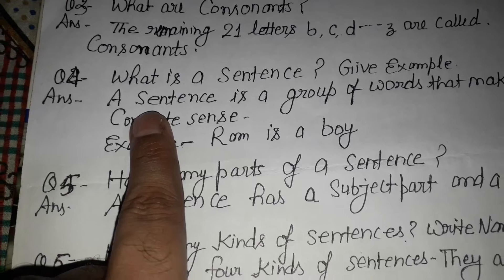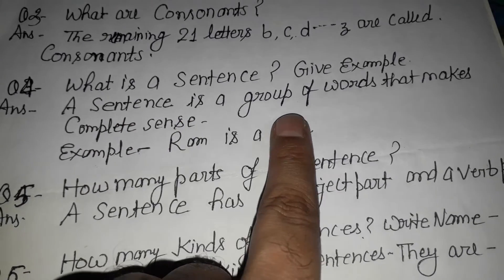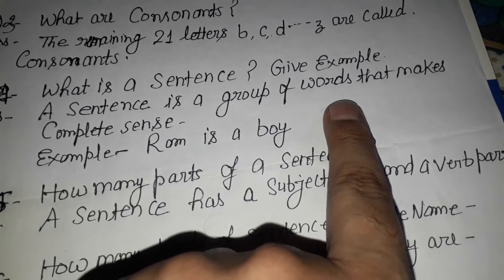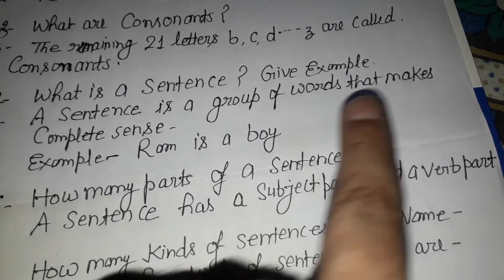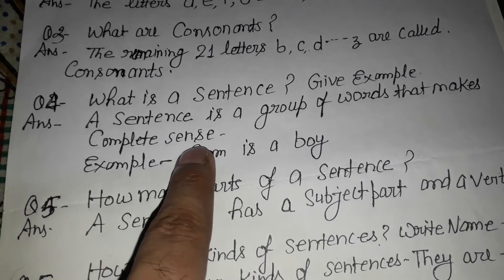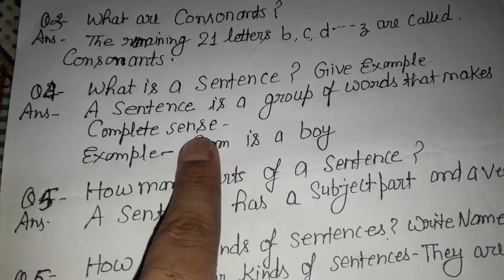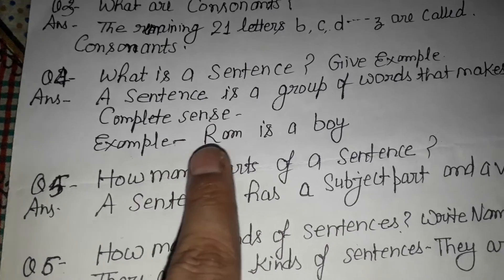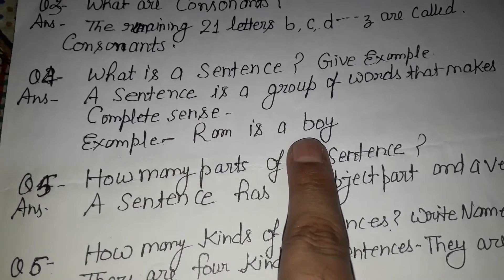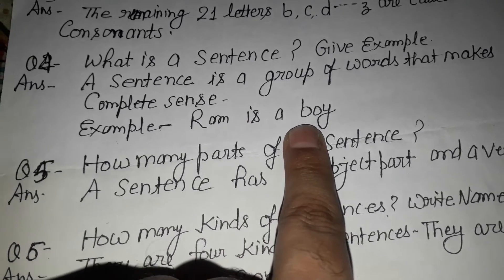A sentence is a group of words that makes complete sense. A sentence is a group of words which gives complete meaning. For example, Ram is a boy. This is a complete sentence.